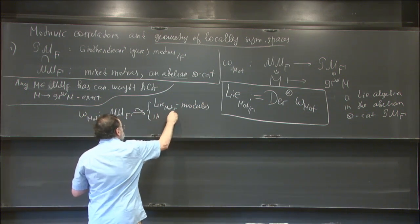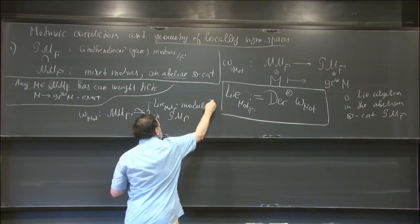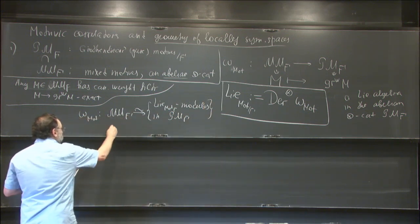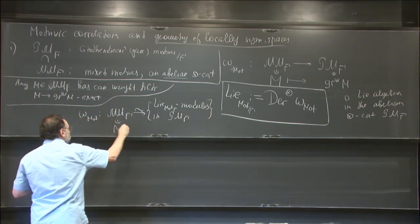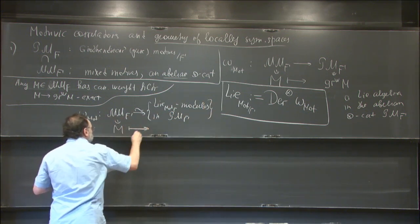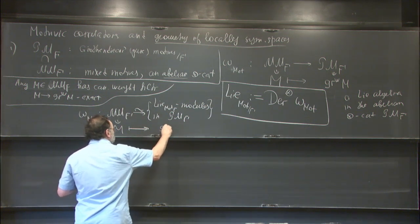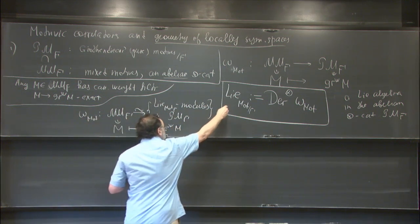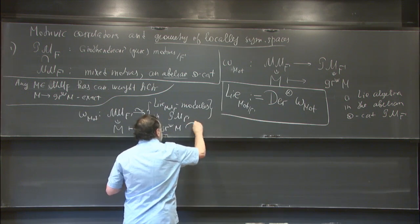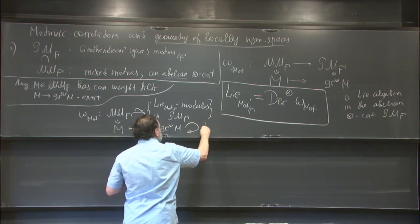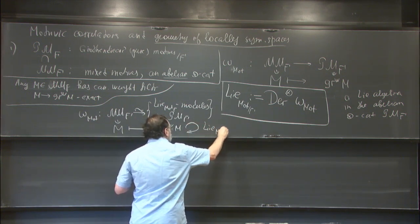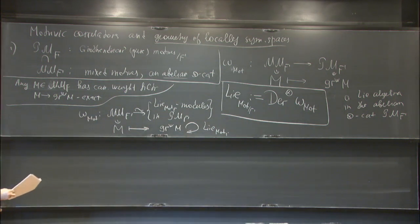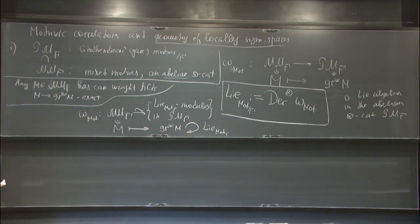This motivic Lie algebra lives in the abelian tensor category of pure motives. This functor provides an equivalence between the category of mixed motives and Lie modules. The functor ω_mot takes the category of mixed motives over F to the category of modules over this Lie algebra in the tensor category of pure motives. You take an object, apply the fiber functor to get gr_W(M), and then the Lie algebra acts on it, giving you a module by definition.